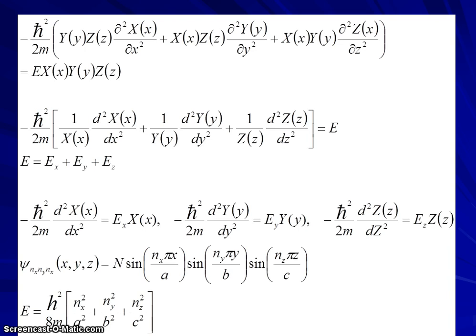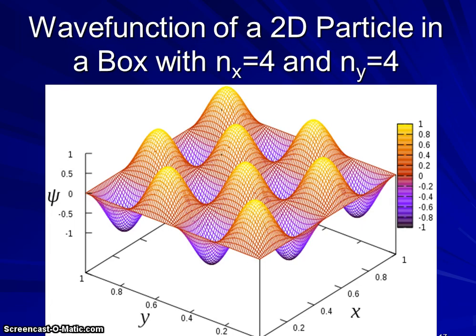The way that works out, if we were to just plot a two-dimensional particle - we can only really visualize a two-dimensional particle in three-dimensional space because the third dimension then is going to be the magnitude of the wave function itself. But if n equals 4, then we have four halves of a wavelength along the Y direction and four halves of a wavelength along the X direction. So this would be a plot of the wave function itself for n_x and n_y equal to 4.